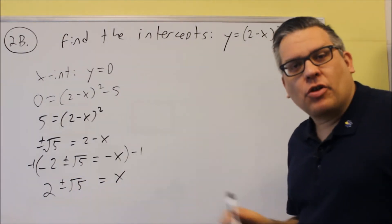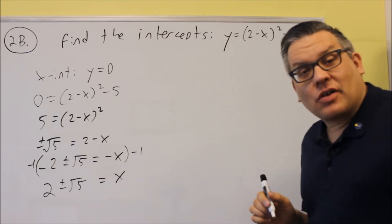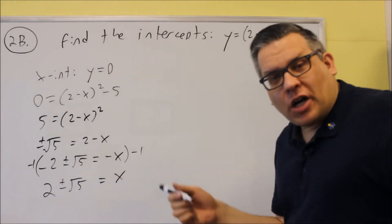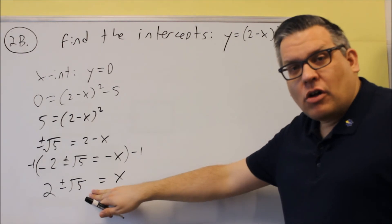So this would be your x-intercept. And you can write it this way on a test. You can write it with the plus or minus. You don't have to separate those. But technically, it's 2 plus square root of 5 and 2 minus square root of 5 would be your answers. So we do have 2 of them there for x-intercept.